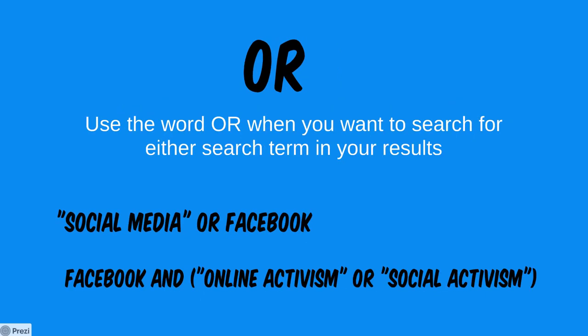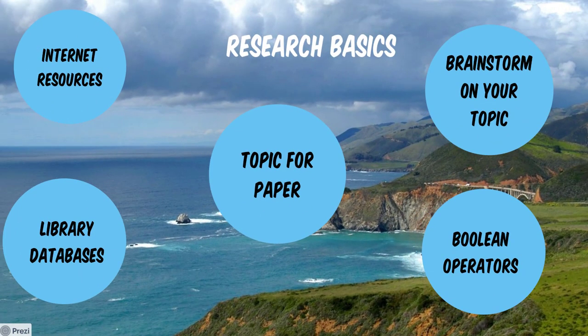There's one other Boolean operator — OR — which expands your search with an either/or approach. This is useful when search terms are similar or you want a comparative search. For example, searching 'social media' OR Facebook returns results mentioning either term, potentially expanding from 1,000 to 3,000 articles. The most important operators are quotation marks and AND. If you have any questions on research basics, feel free to ask your professor, email me, or ask a librarian — we're here to help you out.